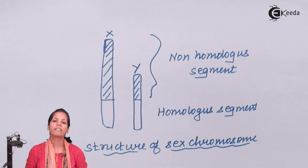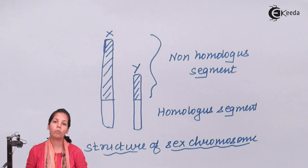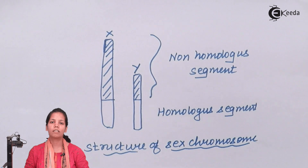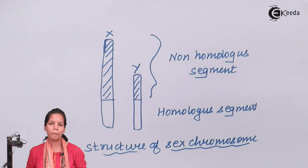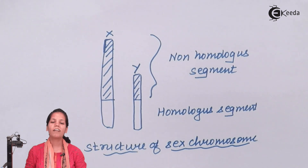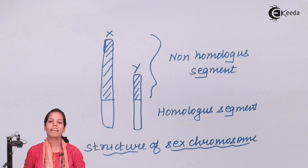In this part of the chapter, we came across homologous, non-homologous, and different kinds of chromosomes, and their heterogametic and homogametic characters. I hope you are all very clear with this concept. Thank you!